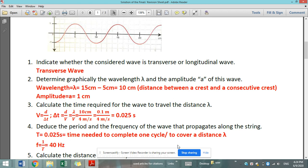Now 4, deduce the period and the frequency of the wave that propagates along the string. So based on what I've mentioned in part 3, we know that covering distance lambda means completing one cycle and the time for one cycle is called period. So now we can use the previous value delta t equals 0.025 seconds and consider it to be the period itself.